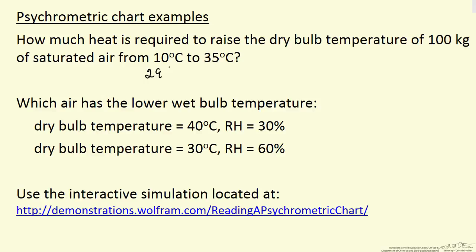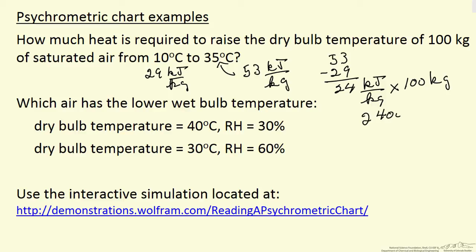So we started out, we were at 29 kilojoules per kilogram for the enthalpy. As we raised the temperature, we added energy, so we're now at 53 kilojoules per kilogram. So 53 minus 29, 24 kilojoules per kilogram multiplied by 100 kilograms. So 2400 kilojoules is the amount of heat that must be added. So this is Q for this problem.